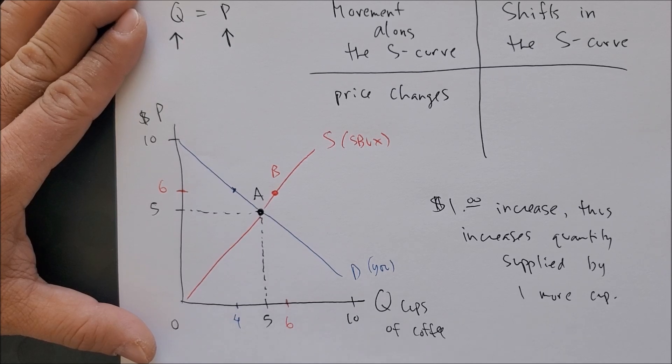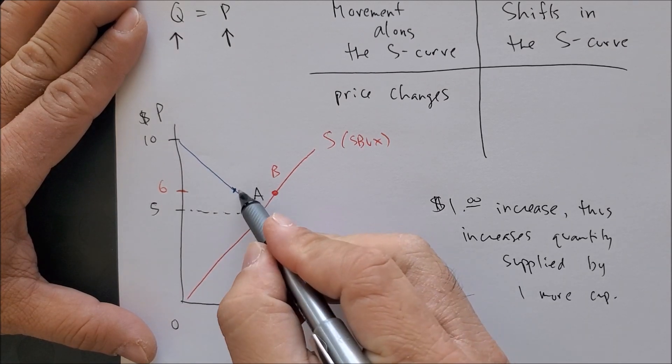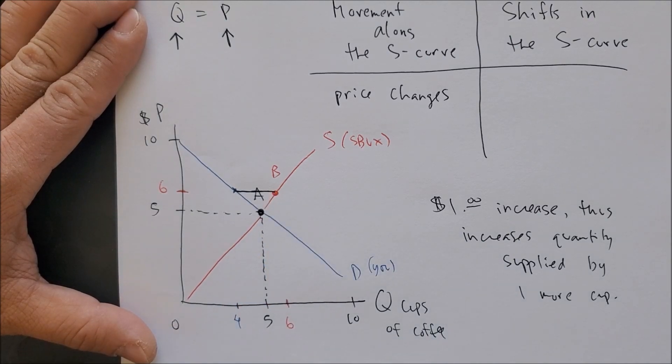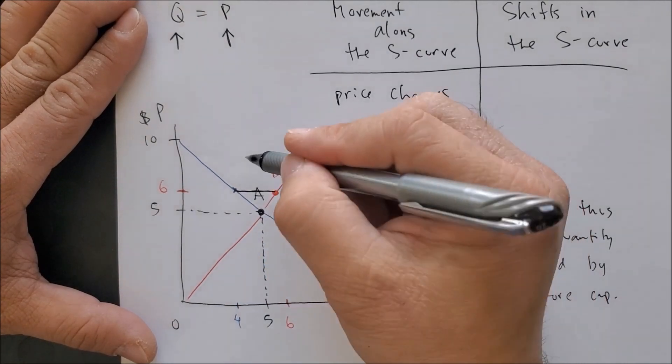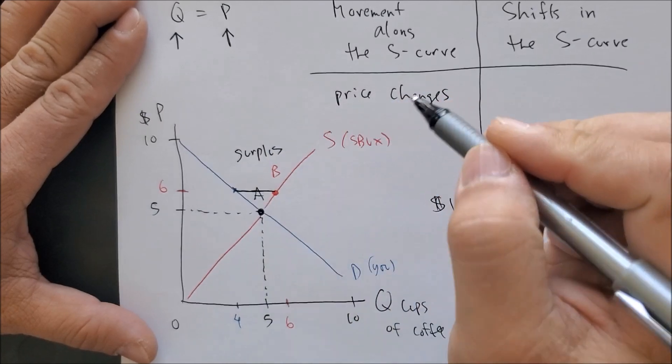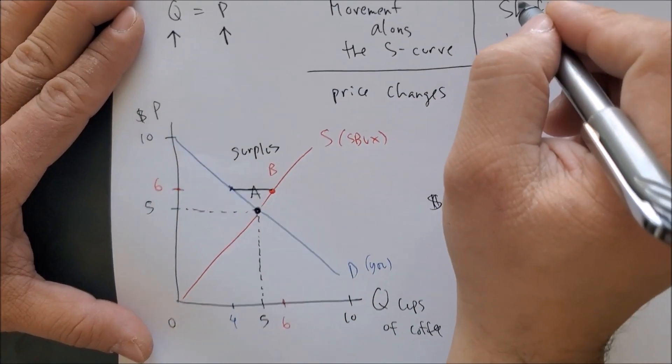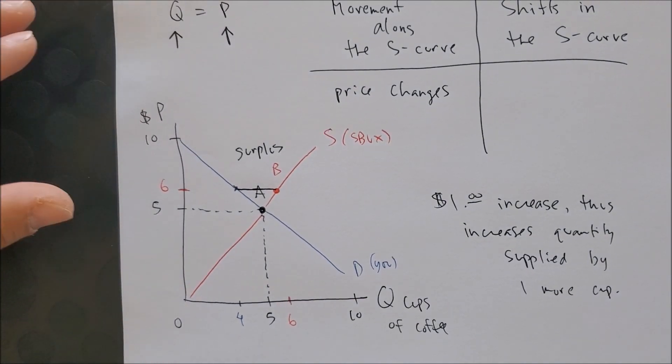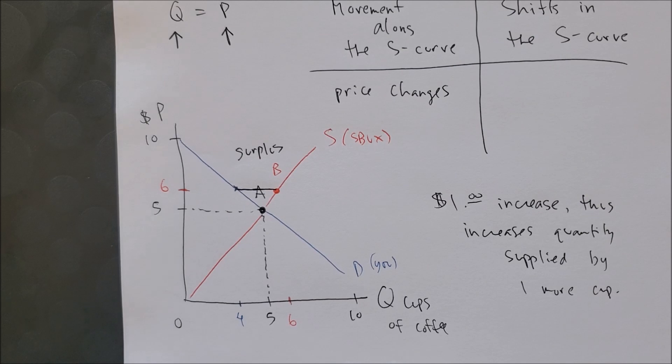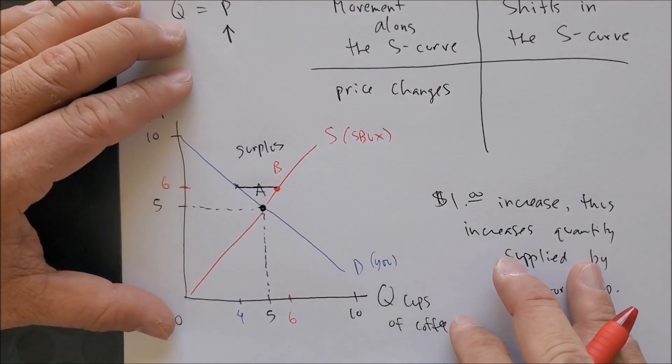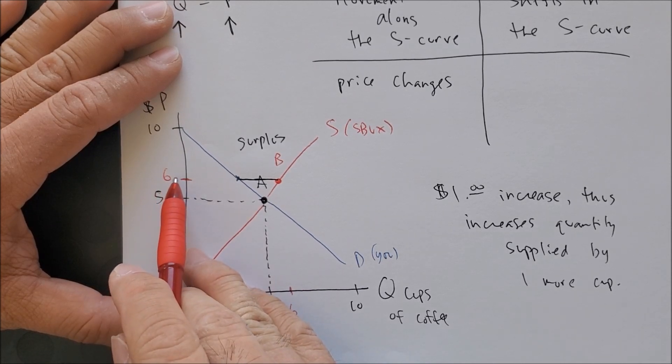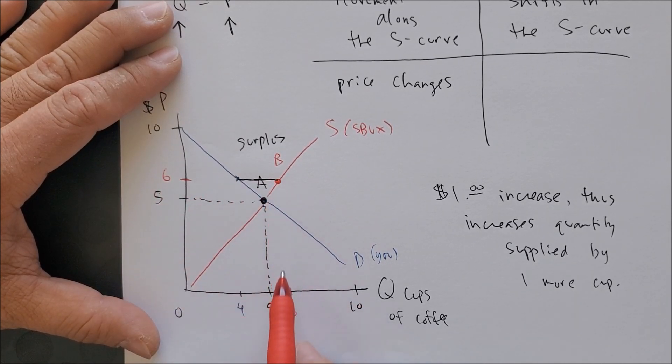Unlike the other example that we showed, the market failure - this black horizontal line between the demand curve and the supply curve - now represents a surplus. A surplus of coffee that producers have overproduced. In this case, six, and consumers willing to only consume four.